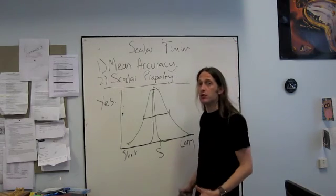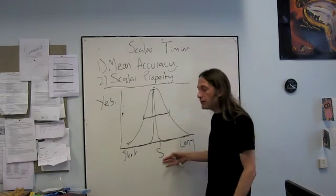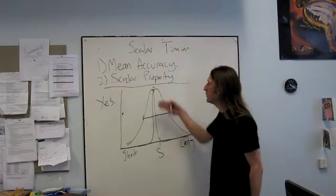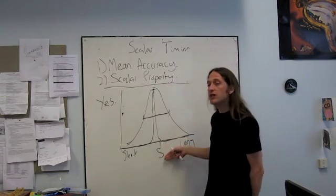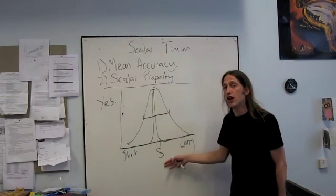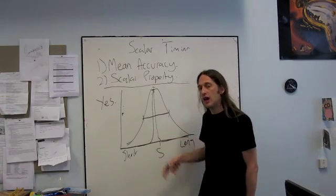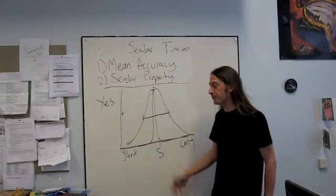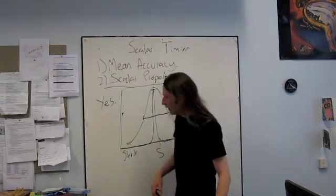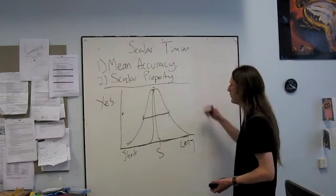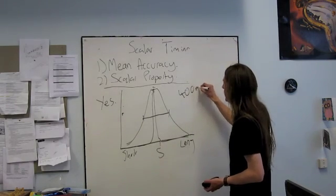With different durations of standards. So we're testing whether, when we increase the duration to be timed, we increase how variable they are proportionally. So what we're doing with this, would be to run this experiment with a 400ms standard, and then run it again with an 800ms standard.